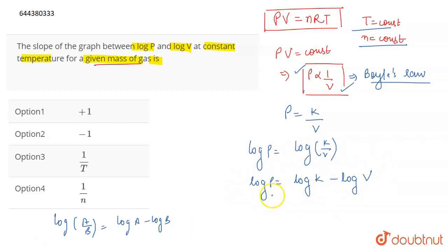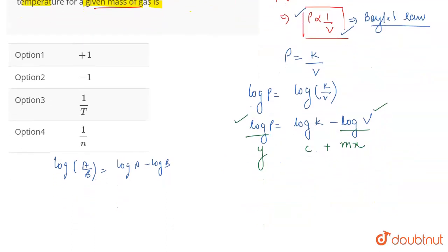Now, if you compare this equation by the equation of a straight line, this will become Y is equal to Mx plus C. Because we are plotting a curve between log P and log V, so log P will be Y and log V will be X. That is how you will compare this equation. Where C is the intercept,